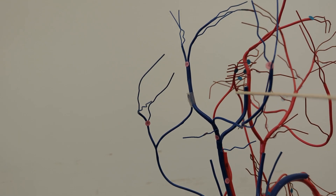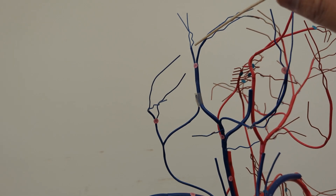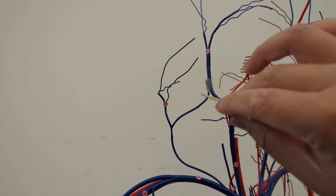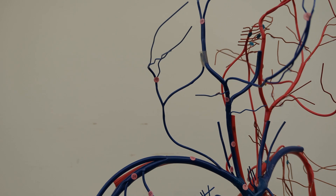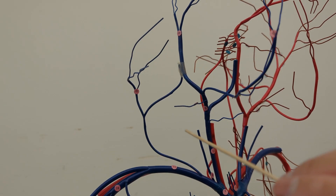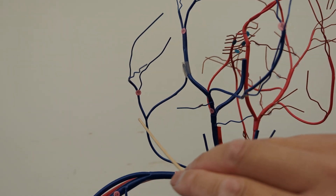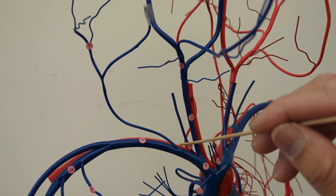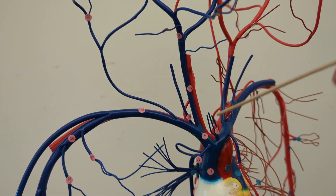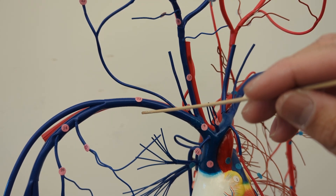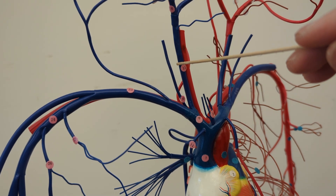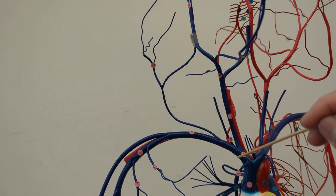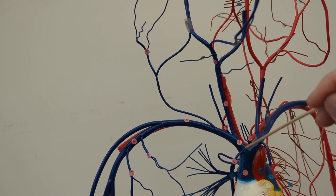If you look closely, you have the superficial temporal vein over here, and that vein, although it is connected, is actually going to drain into the external jugular vein. The external jugular vein is more lateral and smaller, and it drains into the subclavian vein. If we follow the subclavian vein, you'll notice that it joins with the internal jugular vein, and together they form the brachiocephalic vein.